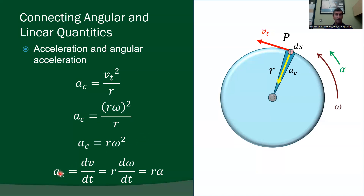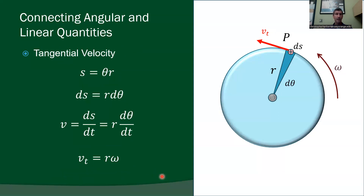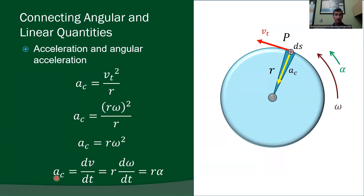We also know acceleration is dv/dt. Keeping radius constant and taking the derivative of v equals r-omega, we get r times d-omega/dt, which is r times alpha. So tangential acceleration equals r times alpha. Notice the pattern: to go from angular quantities to translational quantities, you simply multiply by r. Tangential velocity is angular velocity times r; centripetal acceleration is angular acceleration times r.